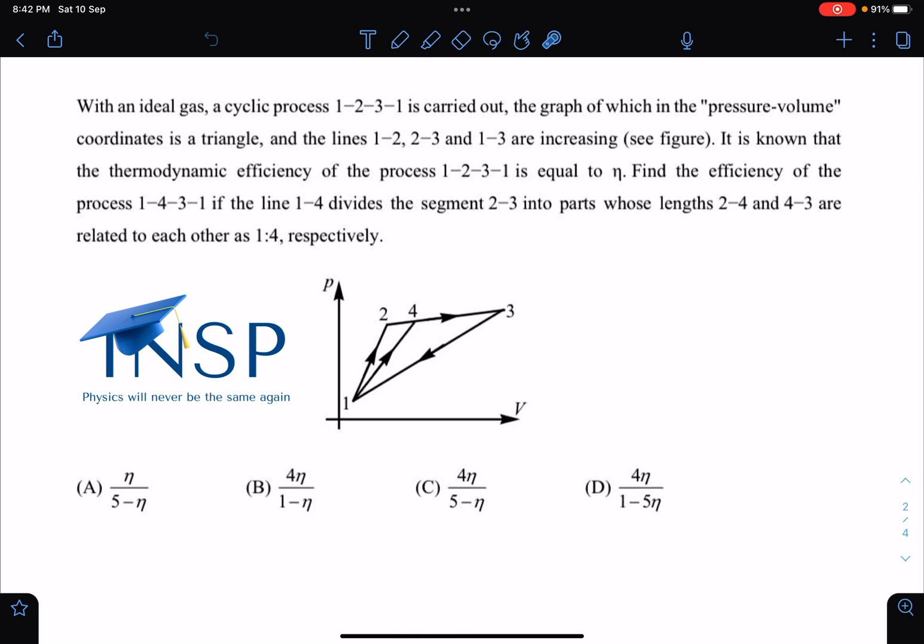It is known that the thermodynamic efficiency of process 1-2-3-1 is equal to η. Find the efficiency of process 1-4-3-1 if the line 1-4 divides the segment 2-3 into parts whose lengths 2-4 and 4-3 are in ratio 1:4. So this is 1 and this is 4 times. Overall, if this is x, then this will be 4x.